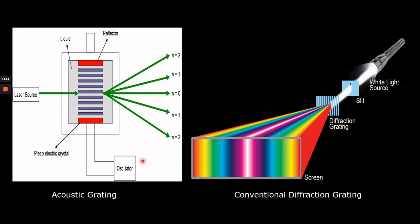Similarly, in acoustic grating, the node part where the density of the liquid is greater acts as opaque, and the antinode part where the density is less acts as a transparent region. So when the propagation path of the ultrasonic wave is illuminated by a monochromatic light source at right angles to the propagation direction of the ultrasonic wave, a diffraction pattern is observed over the screen. That is why the acoustic grating performance is analogous to conventional diffraction grating.